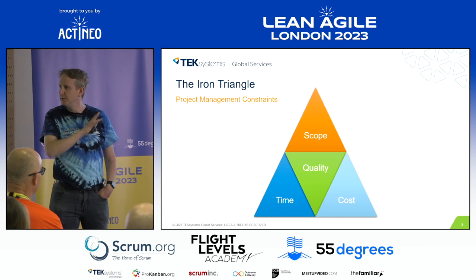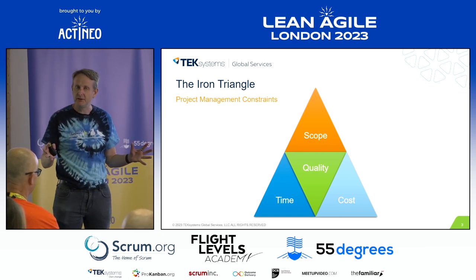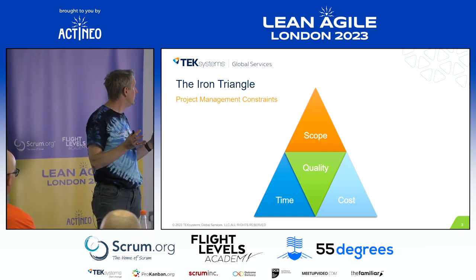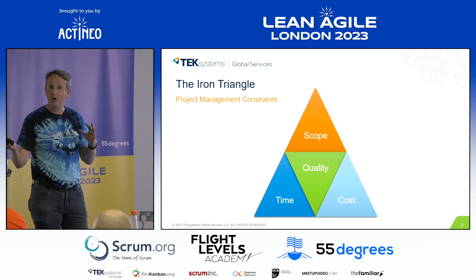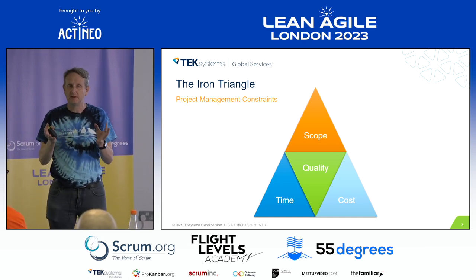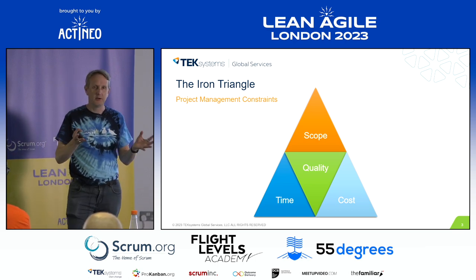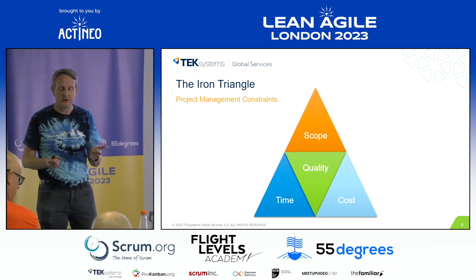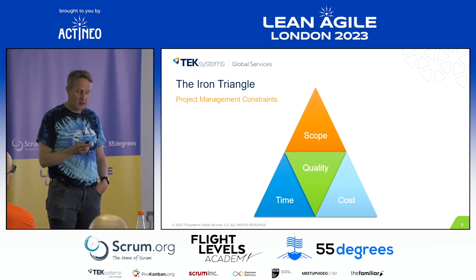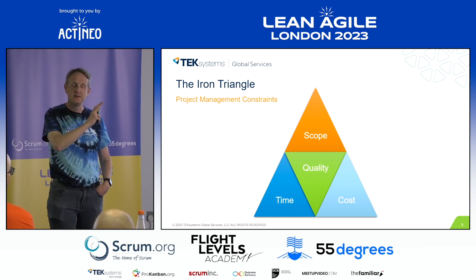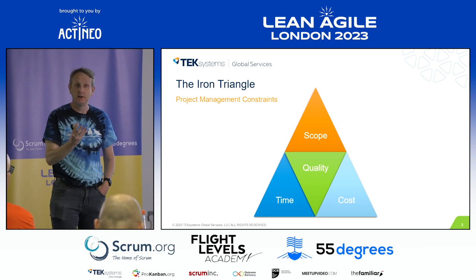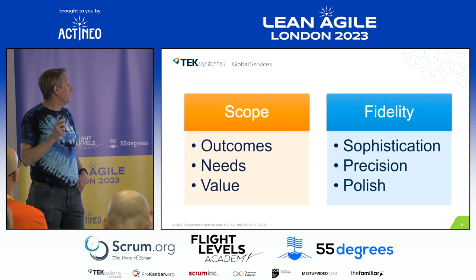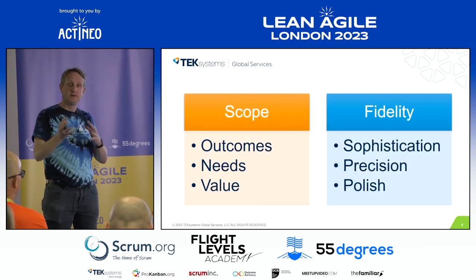We've got the iron triangle — everybody's familiar with it — and we know those constraints reduce the flexibility of what we can do. Typically we talk about scope, time, and cost. Quality is something we say we don't negotiate, except that we probably all know quality is the first thing to get negotiated and cut down on, because we've got to hit the date, we can't increase cost, and we've got to hit the scope. But I think fidelity gives us a way of answering this, and fidelity is kind of what agile brings that really differentiates it from other ways of working. And partly it's differentiating fidelity from scope.